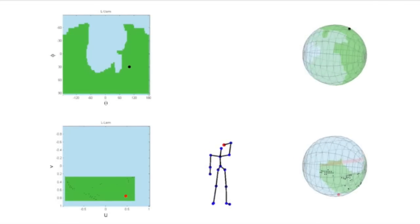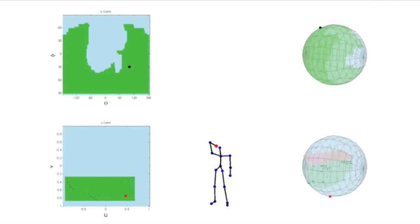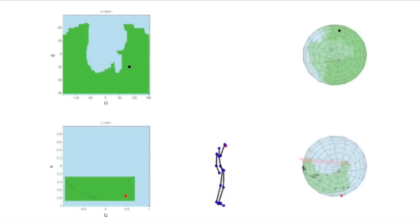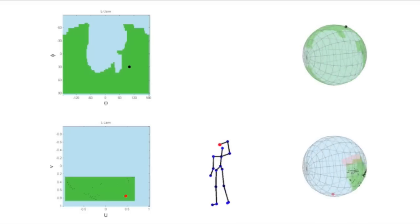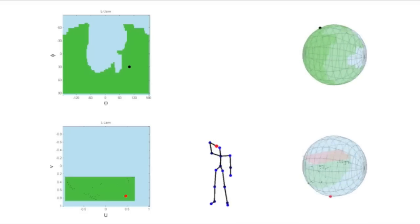The joint angle limits for the right wrist are conditioned on the position of the right elbow. We observe that for a given location of the elbow, the wrist can only lie on a hemisphere or even a smaller part of it, as shown here on the bottom right.